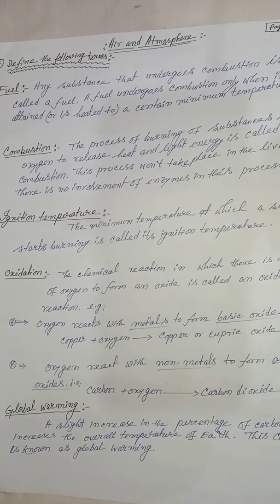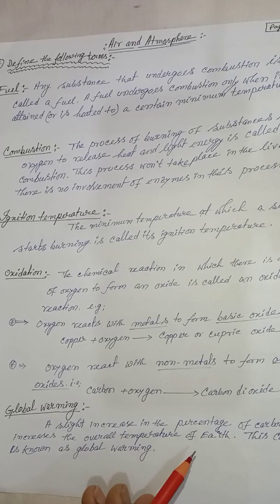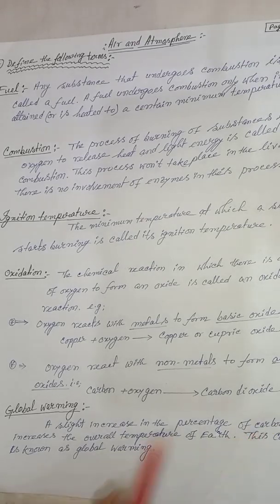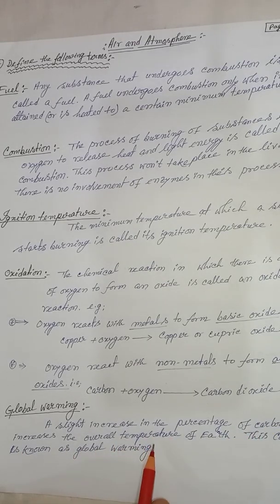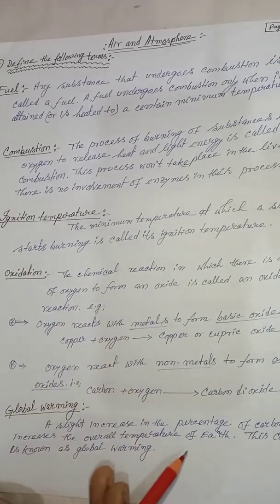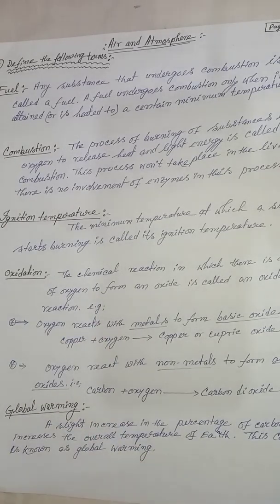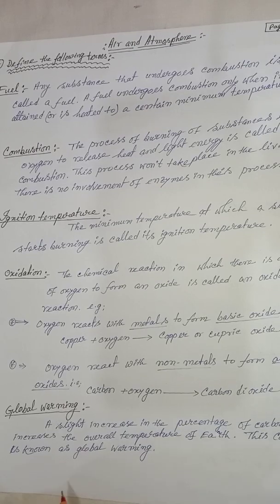Global warming: a slight increase in the percentage of carbon dioxide increases the overall temperature of the Earth's surface. This condition is known as global warming.